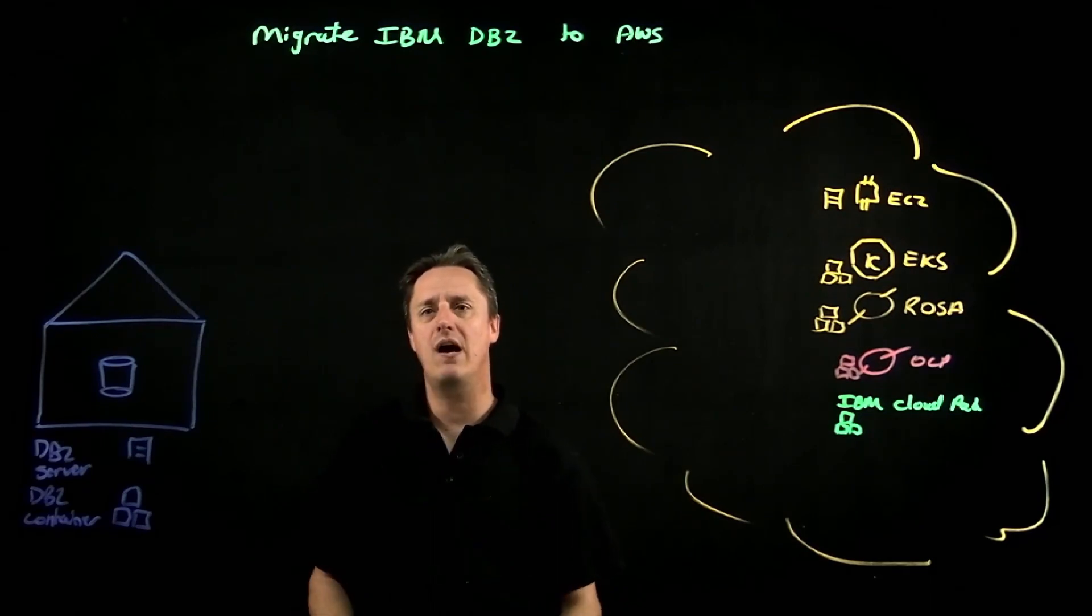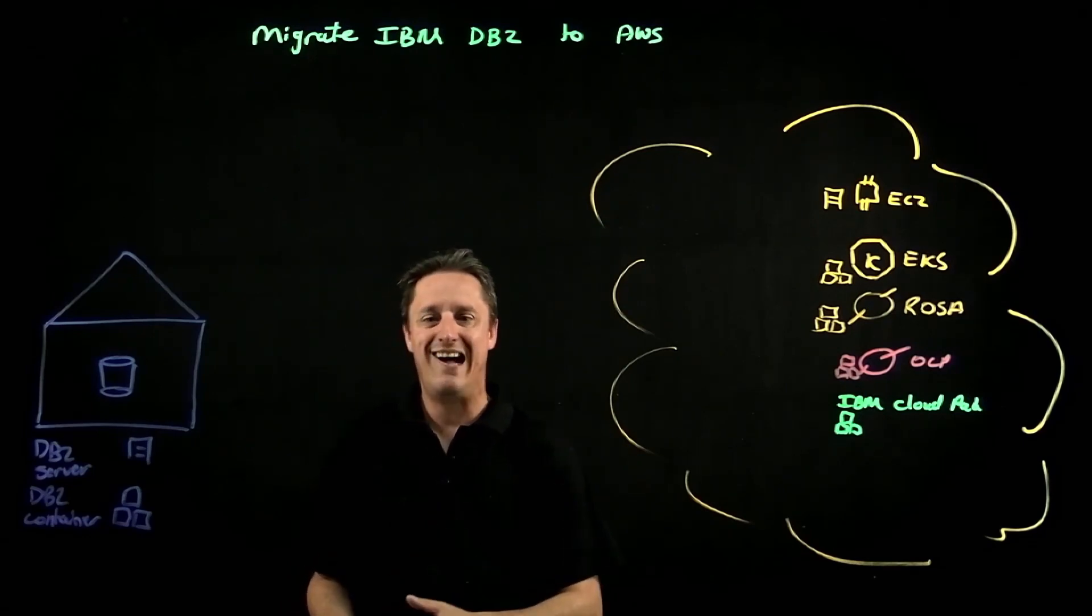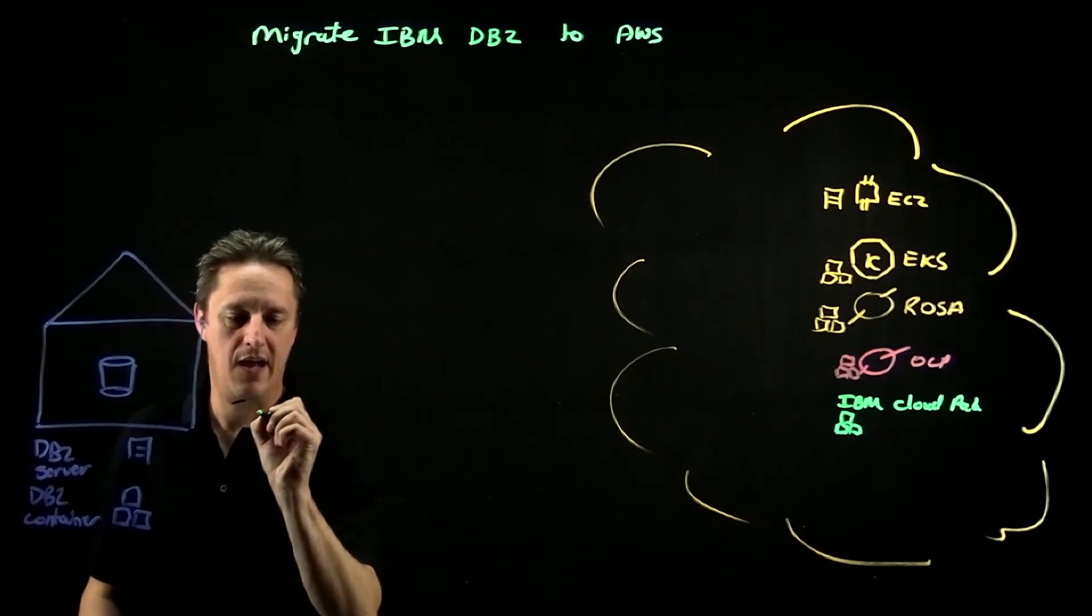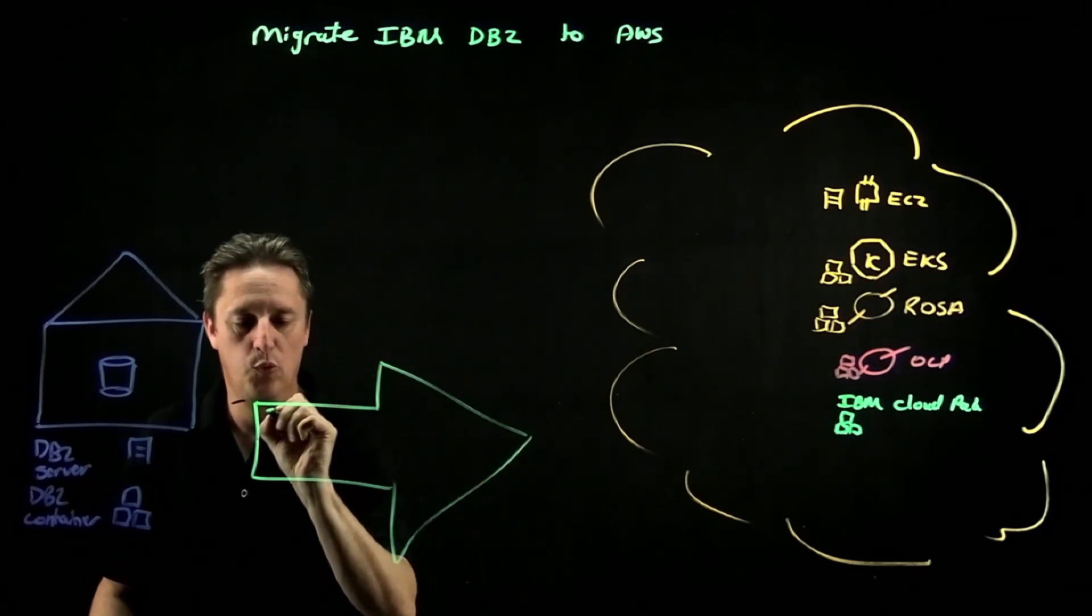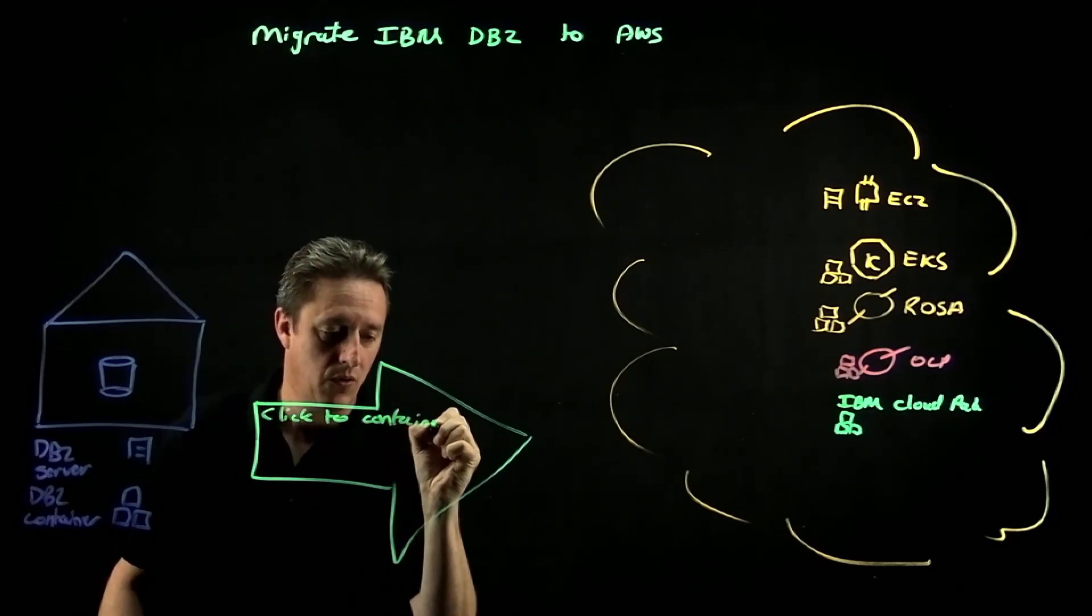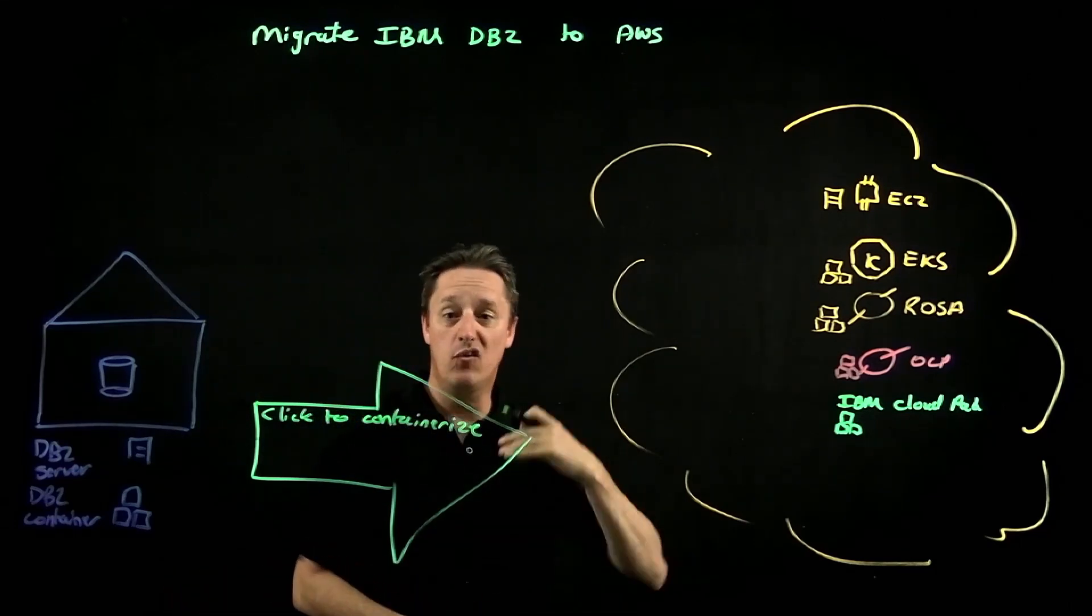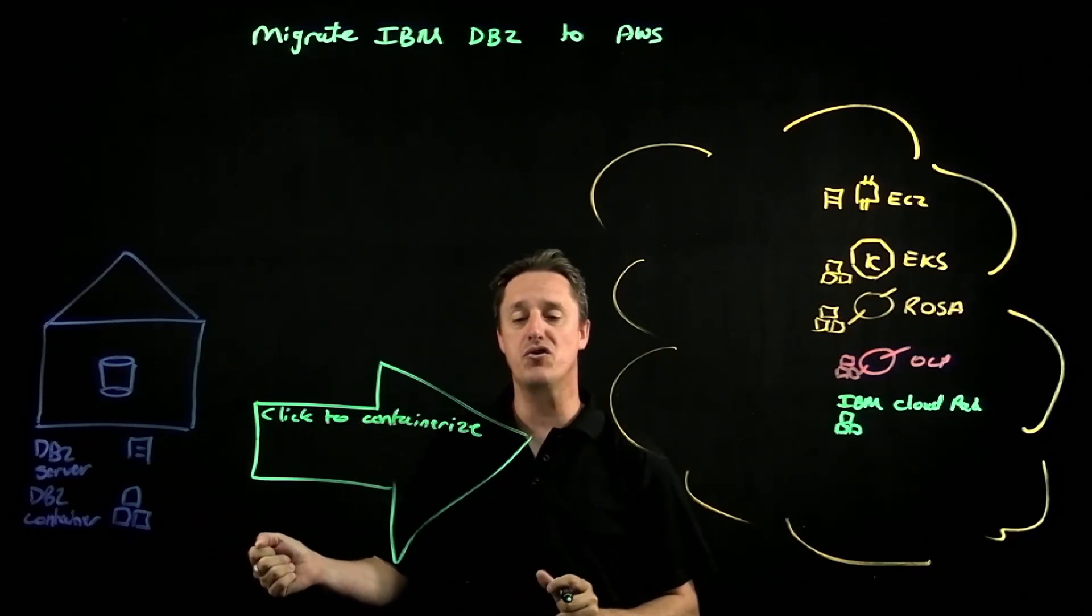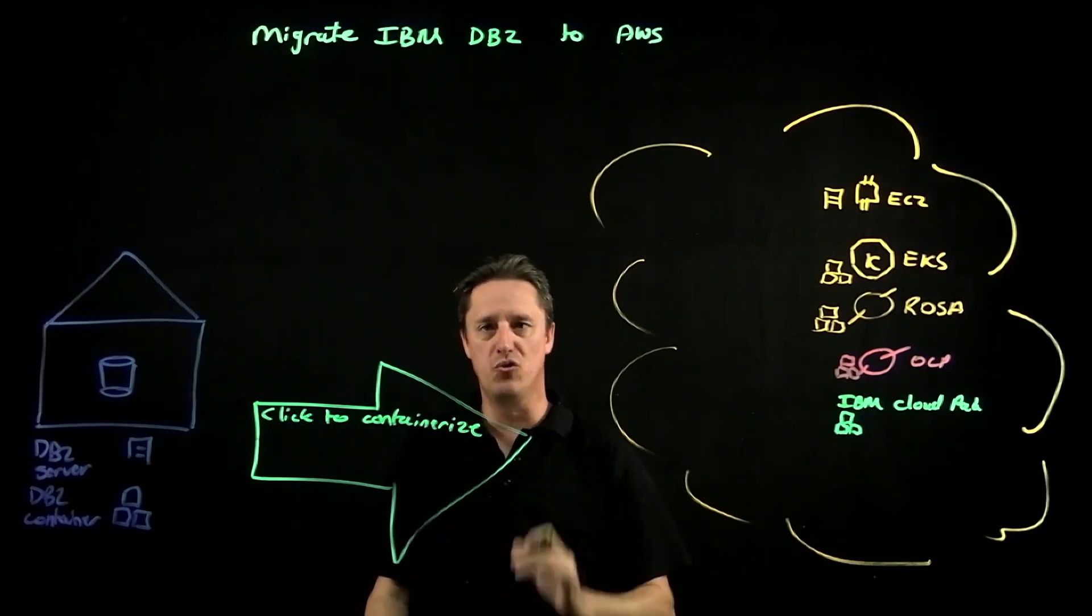So what IBM have done is IBM have created a product that customers can use to help through this process. Essentially what we have is customers can use a very simple tool called Click2Containerize. Now Click2Containerize is an add-on module. It is part of DB2. So if you're running DB2 server or if you're running the containerized version of DB2, Click2Containerize is already inside DB2. It's a tool that you just need to utilize.